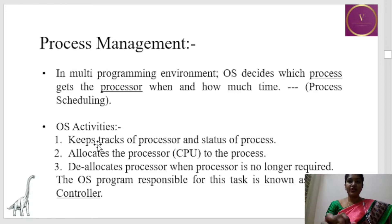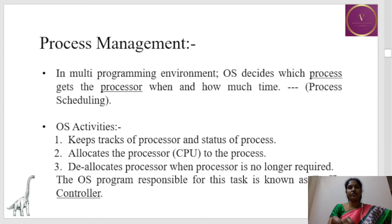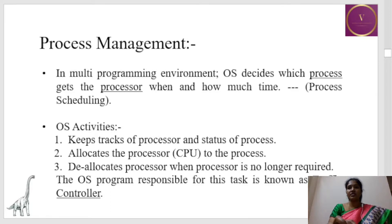Next is process management. In a multiprogramming environment, OS decides which process should get the processor, when and how. This is called process scheduling, and it is discussed in detail in upcoming chapters. OS does the following in process management: it keeps track of the processor and status of the process, allocates the processor to the process, and once the process is terminated, deallocates the processor as it is no longer used. The OS program that does the job of process scheduling is called the traffic controller.